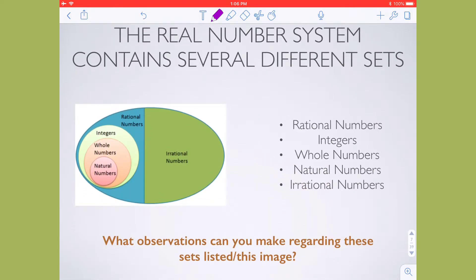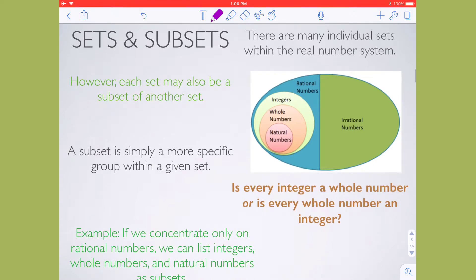When I think about the real number system, it contains several different sets. You have the two big sets, rational and irrational. And then you have subsets, which are inside of your rational numbers. So integers, whole numbers, and natural numbers are inside of rational numbers. I want you to think about some observations that you can make regarding the set. I encourage you to pause the video and jot it down. And just to kind of think through, what conclusions can you make regarding this image?